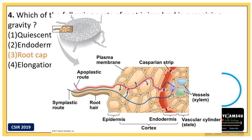The endodermis is a single layer of cells surrounding the vasculature, having a specialized thickening made of lignin called Casparian strips. The movement of water through cell wall spaces is the apoplastic pathway, and movement through plasmodesmata within the cell is the symplastic pathway. The Casparian strips block the apoplastic route, forcing symplastic transport and filtering the content reaching the vascular tissue.